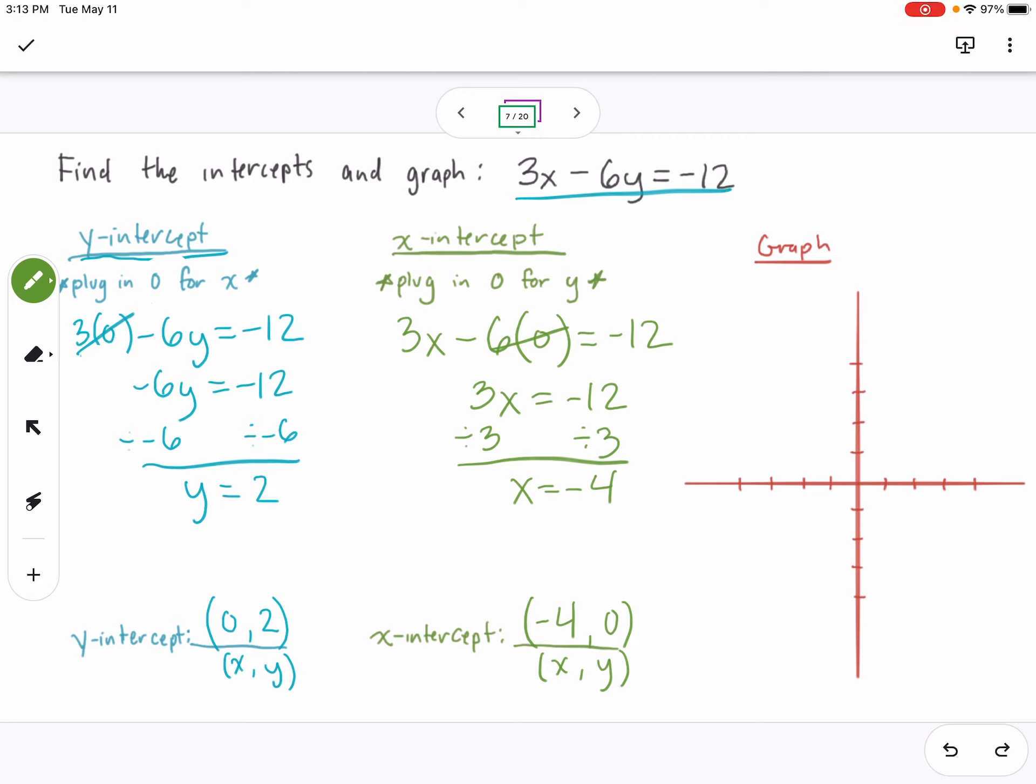When I graph these points, (-4,0) is right here. Notice that's the x-intercept on the x-axis. And the y-intercept (0,2) is right here on the y-axis.